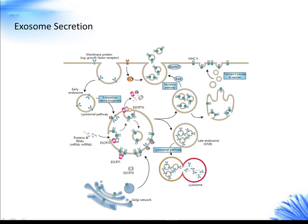Exosome secretion is regulated by MVB fusion with the plasma membrane, where RAB proteins play an essential role in intracellular vesicle transport between different compartments. RAB proteins belong to a family of small GTPases composed of more than 60 members.